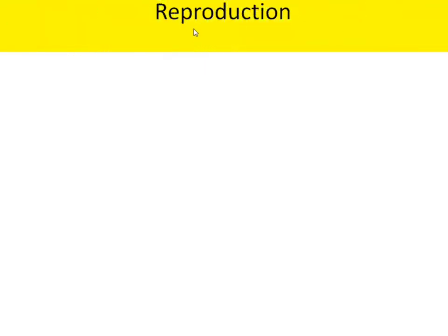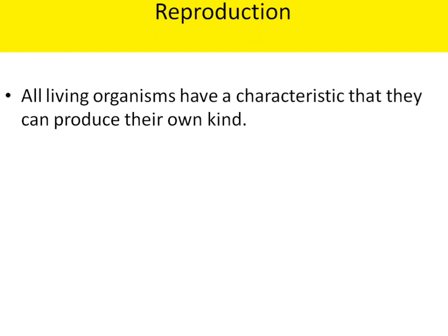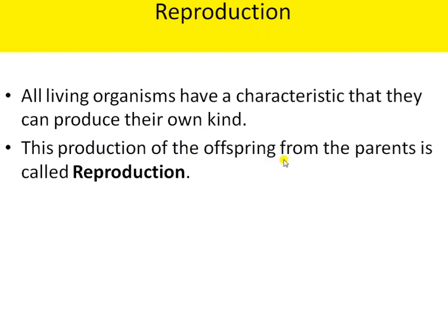Next, the first topic is Reproduction. Reproduction is the most important characteristic of all living organisms — to produce their young ones or to produce their own kind. All living organisms have the characteristic that they can produce their own kind. This production of offspring from the parents is called reproduction. The production of a new organism from the parent organism is also called reproduction.